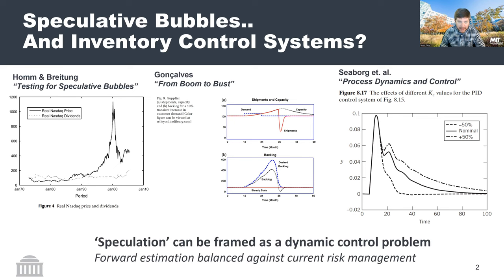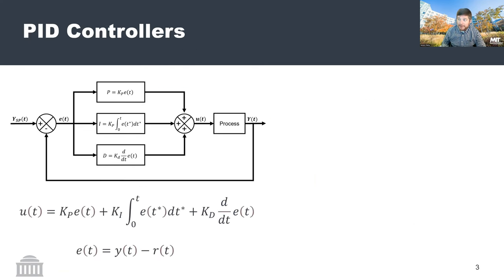My argument is that speculation can be framed as a dynamic control problem — one in which a group of people form some expectation of the future and balance that against current risk management. It's a future reward versus current risk tradeoff, which is exactly what you do when you set up a classical control problem in an inventory control or control setting. When I say control setting, we come back to the PID controller. For most of this audience, this will be review.